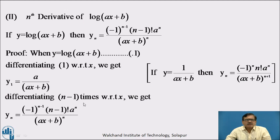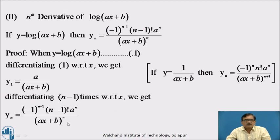We know that if y equal to 1/(ax plus b), then yn equal to (minus 1)ⁿ n! aⁿ divided by (ax plus b)^(n+1). Differentiating n minus 1 times with respect to x — because we have already computed the first derivative — and replacing n by n minus 1 in the formula, we get (minus 1)^(n minus 1) into (n minus 1)! into a^(n minus 1) times a divided by (ax plus b)ⁿ, which gives (minus 1)^(n minus 1) (n minus 1)! aⁿ divided by (ax plus b)ⁿ. This proves the formula.